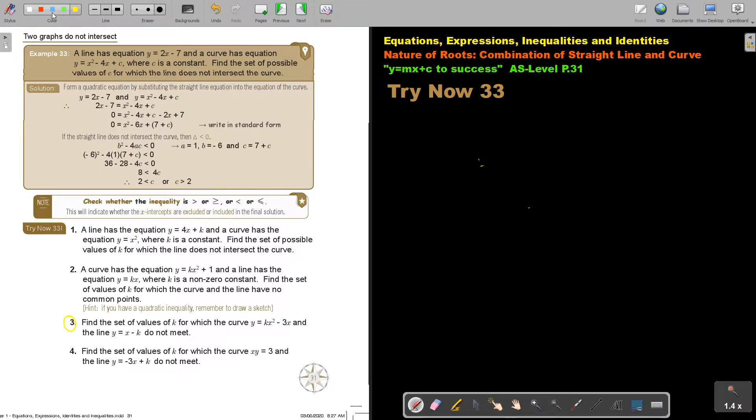Let's start. Number 3. Find the set of values of k for which the curve and the line do not meet. So, the first thing is I must make it one equation. And how do I do that? Let's call this 1, 2. I can just say substitute 2 into 1 or 1 into 2. It doesn't matter because there's y.